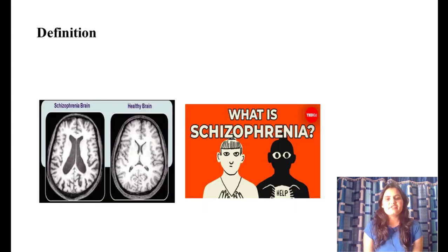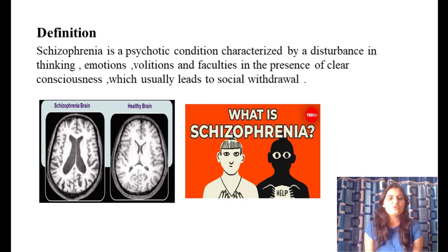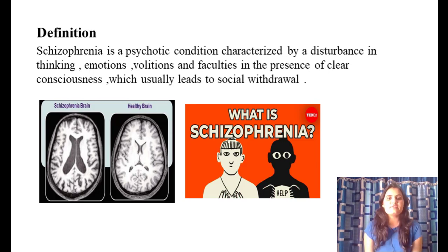The definition of schizophrenia: it means 'splitting of the mind.' It is a psychotic condition in which a person's thinking and emotions change, but the person is fully conscious. Consciousness and insight are two different things, and as a result the person tends to be socially withdrawn with no interest in their environment.